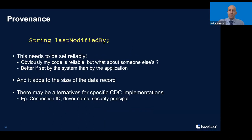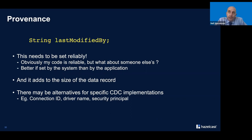The problem with that solution is it depends on code setting that field correctly. I've been writing code for years and I never get it wrong - as if. It's a lot easier to assume other people get it wrong. That field really needs to be reliable. Ideally system A or system B would set it for you, but that's not going to happen, so I have to do it reliably and it makes my data record bigger. The CDC system might give you some metadata like the security principal or the driver name that lets you reliably derive whether a change originated locally or from another system.